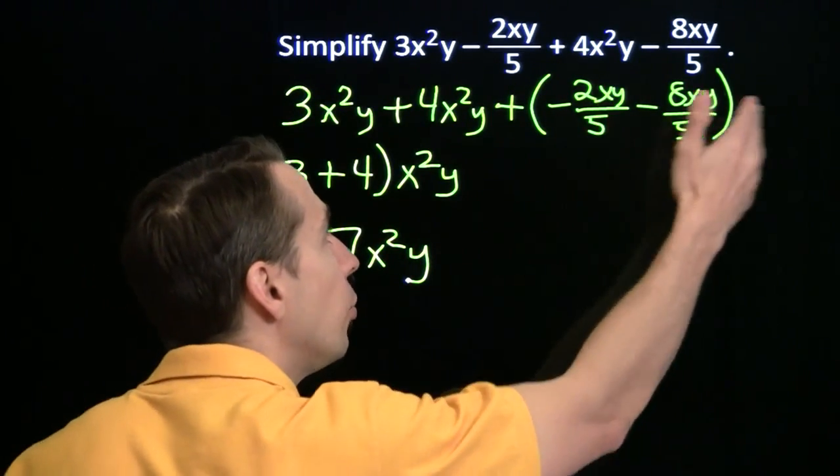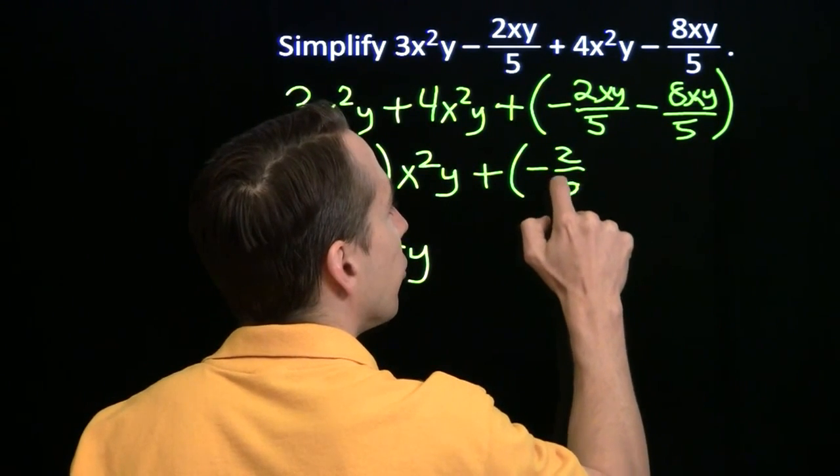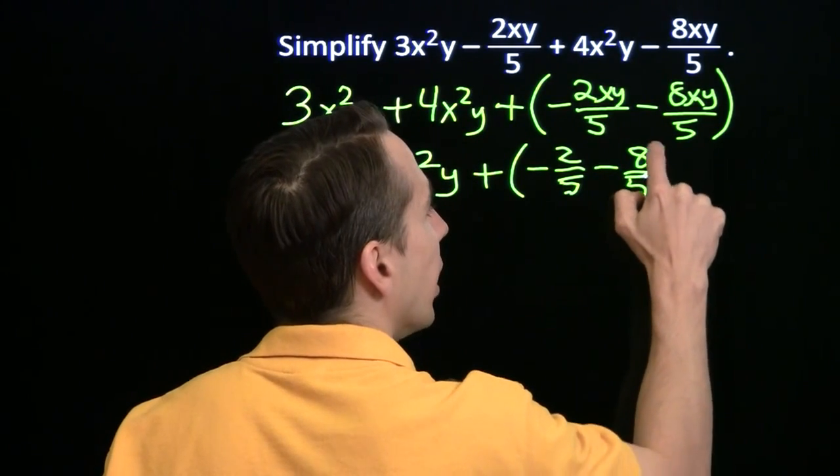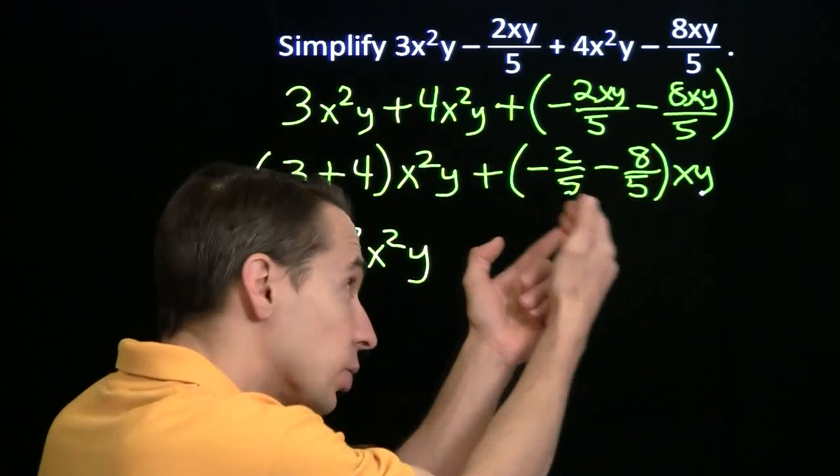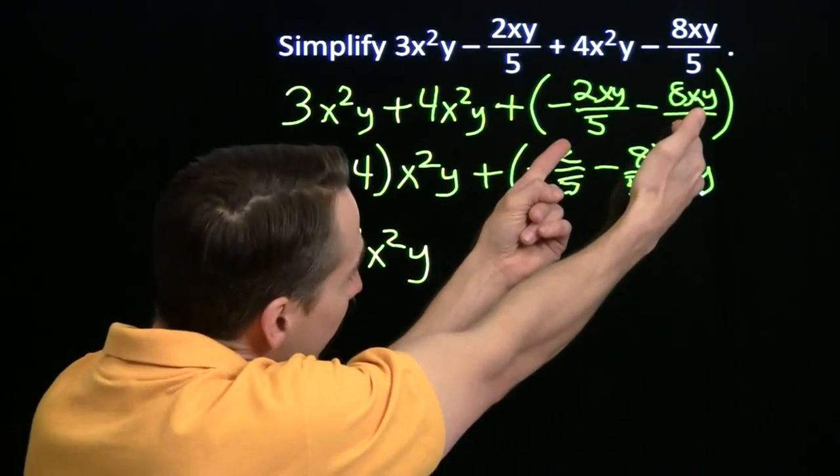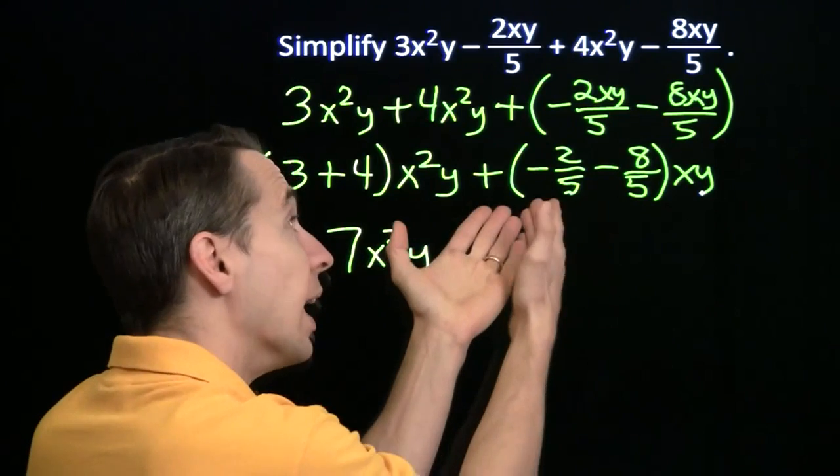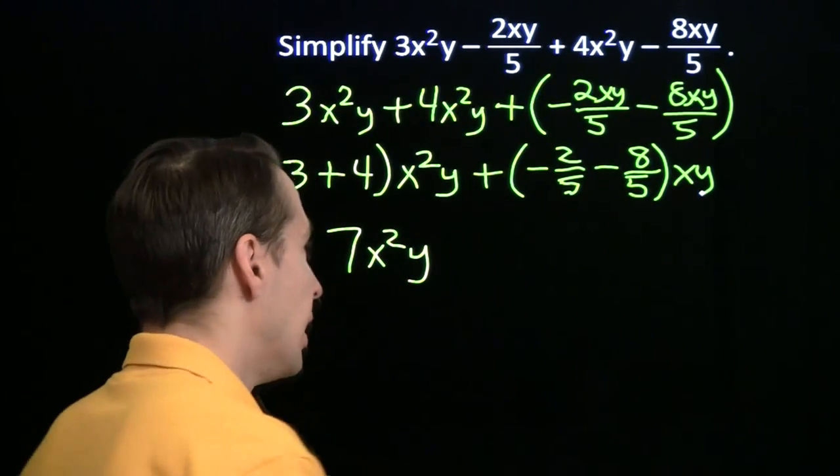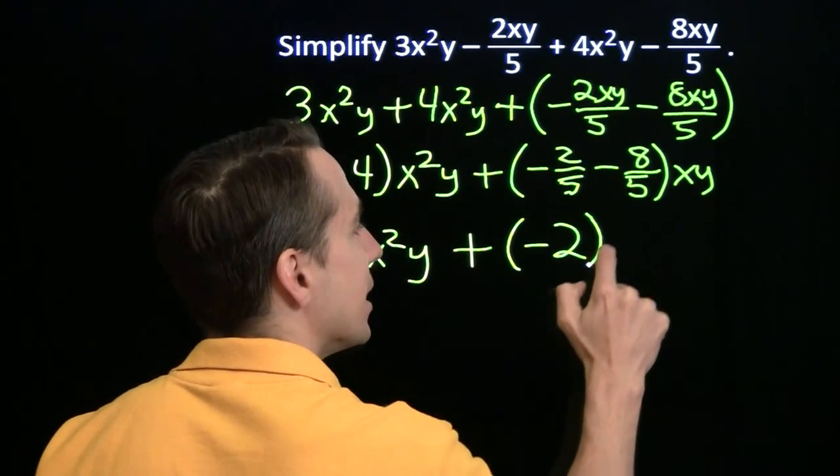Now what about this over here? We can do the same thing. We can pull that xy out and write this as minus 2 fifths minus 8 fifths times xy. And if I multiplied this xy back in here, expanded this product, I'd get that right back. Minus 2 fifths times xy minus 8 fifths times xy. Now I can combine these: minus 2 fifths minus 8 fifths. That's minus 10 fifths, otherwise known as minus 2.